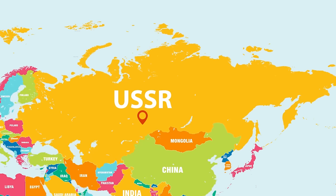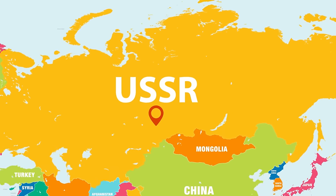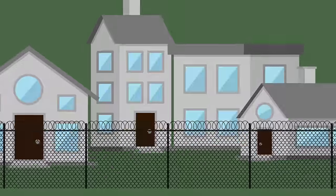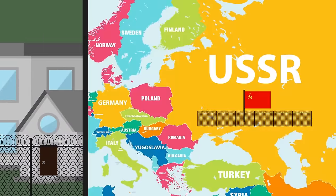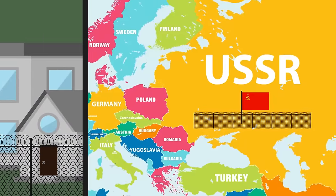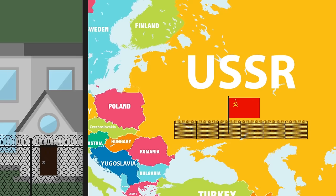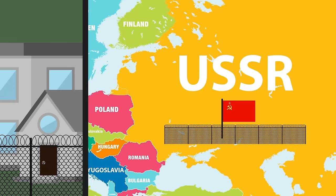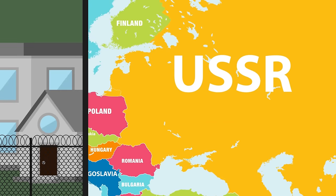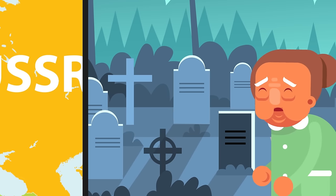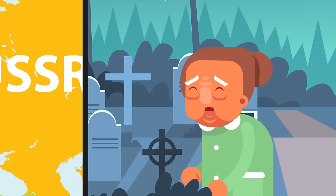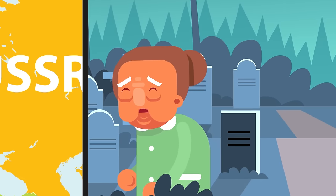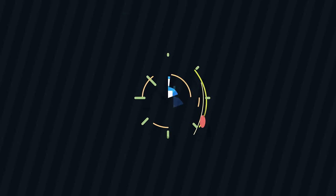The Soviet Gulag — infamous slave labor camps that persisted for three decades and killed hundreds of thousands of Soviet citizens. Years after the fall of the Soviet Union and the lifting of the Iron Curtain, details on the Soviet Gulag can still be hard to come across, and survivors even rarer. Most prisoners were worked to death or so malnourished or crippled by their experience that their lifespans were cut tragically short, even after release.